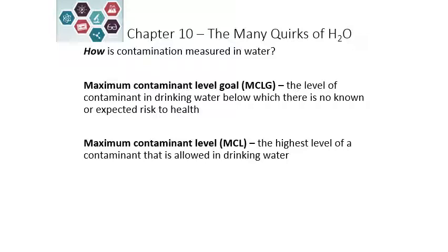One is the MCLG, which is the maximum contaminant level goal. This is where, if we're below this level, there are no known health risks. There's also a maximum contaminant level, and this is the maximum that is allowed to be in our drinking water.